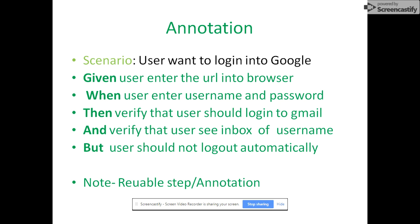In a feature file we can have multiple scenarios. We can write multiple Given, When, and Then for one scenario. And can be placed after Given or When as a continuity of the previous step — you can write multiple And steps for multiple verifications. Given, When, Then, And, and But are reusable step annotations, so once you write them you can use them in any scenario without generating a new step definition.